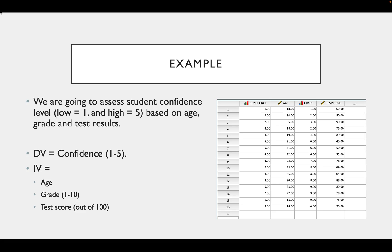In this tutorial, we're going to assess student confidence level based on age, grade and test result. So we have an ordinal dependent variable of confidence, which is measured on an ordinal scale of between one and five.